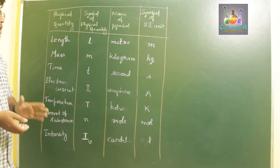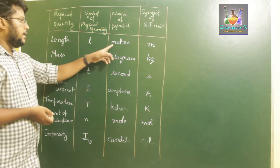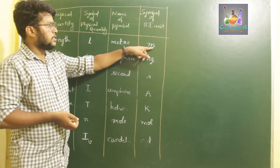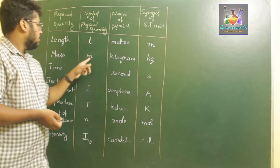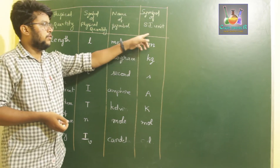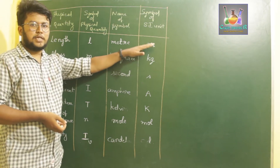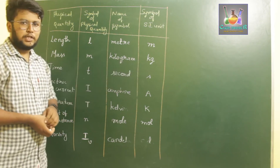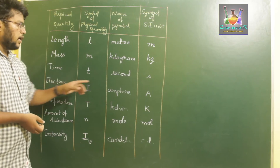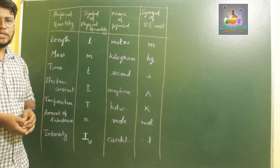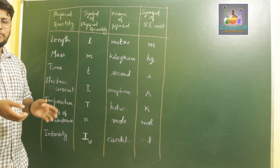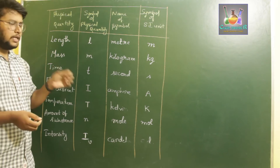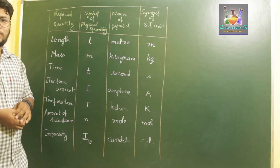The SI unit for length is meter, with symbol small m. Don't confuse the SI unit symbol 'm' for meter with the symbol 'M' for mass. For mass, the unit is kilogram (kg). For time, the unit is second — though time can also be expressed in minutes, hours, or years, the specific SI unit for time is second.